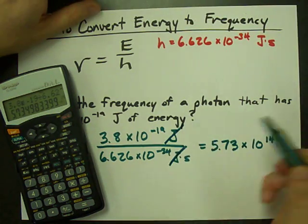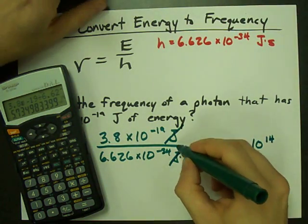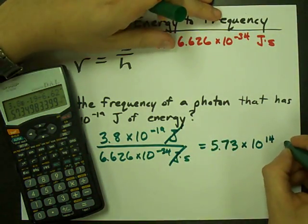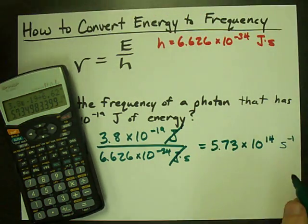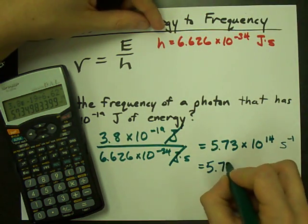My units - joules cancel out on the top and bottom, I'm left with seconds on the bottom. That's seconds to the minus 1, the proper unit for frequency.